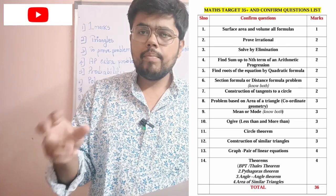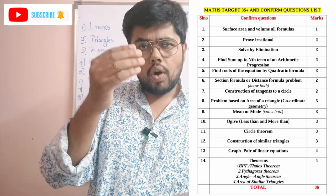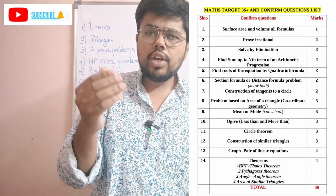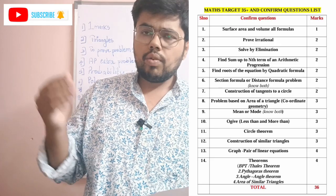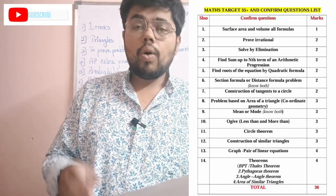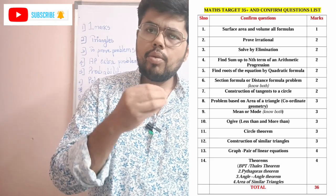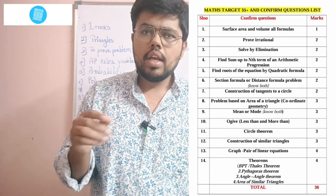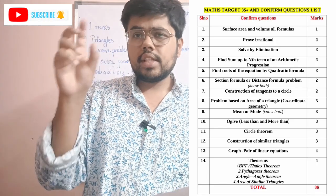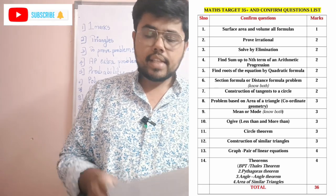Next, mean, mode, and median — three marks, one definite question. You can study either mean or median. For ogive — obviously less than and more than. It will be a direct problem: directly plotting less than and more than on a graph. Please take out a graph sheet and practice end to end. Since it is three marks, it needs to be very neat.